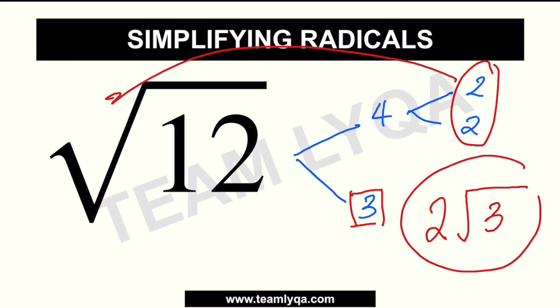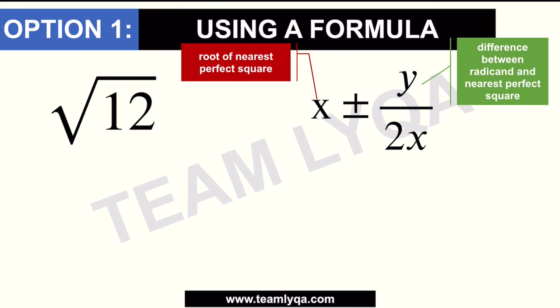But what if you don't want that form and you want a decimal answer instead? We want to estimate it to the nearest hundredths. What can we do? Since we can't use a calculator for all numbers in the world, there are a number of options. The first one is to use a formula — a common formula used when estimating the square root of imperfect squares. In the formula, x is the root of the nearest perfect square, and y is the difference between the radicand and the nearest perfect square.